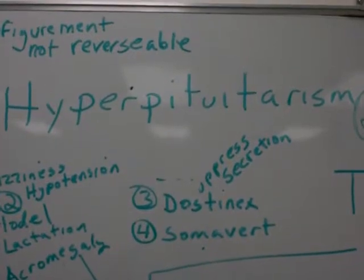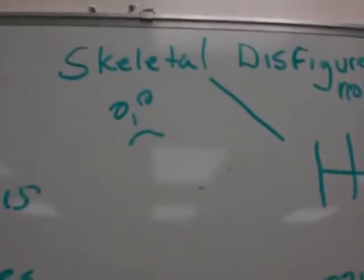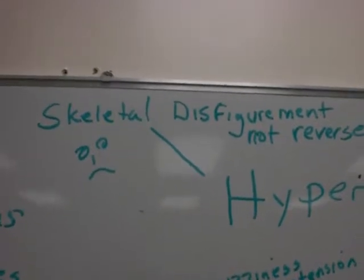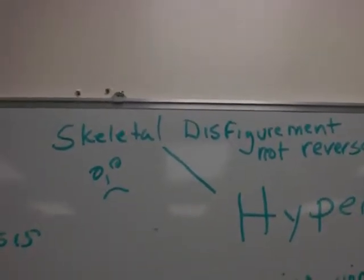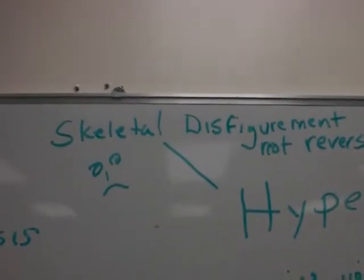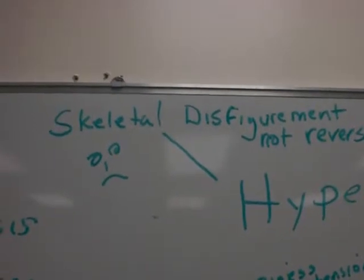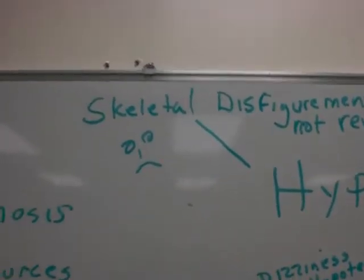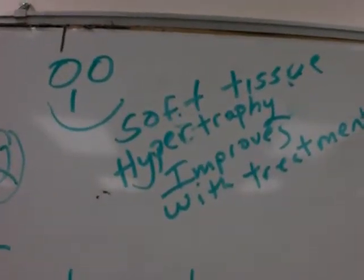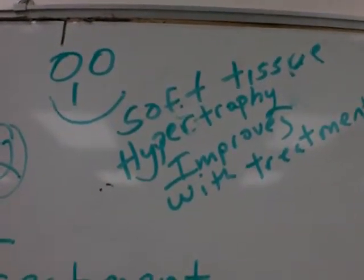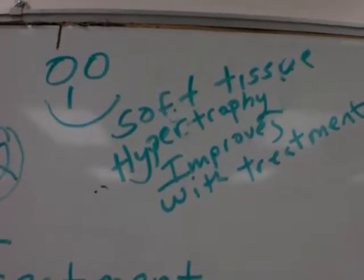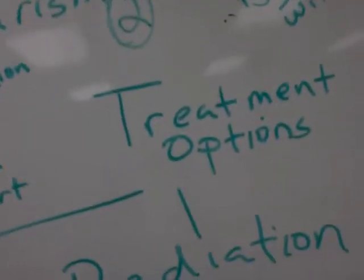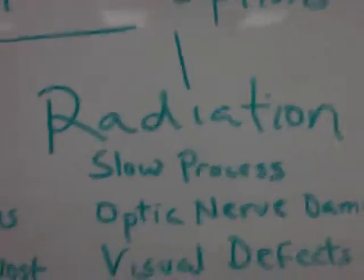Now we're going to look at the treatment of hyperpituitarism. There's some happiness and some sorrows here. The sorrow: skeletal disfigurement — when bone has grown and been distorted, it's irreversible. We cannot encourage the patient to say that with treatment this shall change, though we can keep an open mind about plastic surgeons. The happy side: organomegaly and soft tissue growth — this we can get improvement on with treatment. That's reversible. Our treatment options are medications, radiation, and surgery.